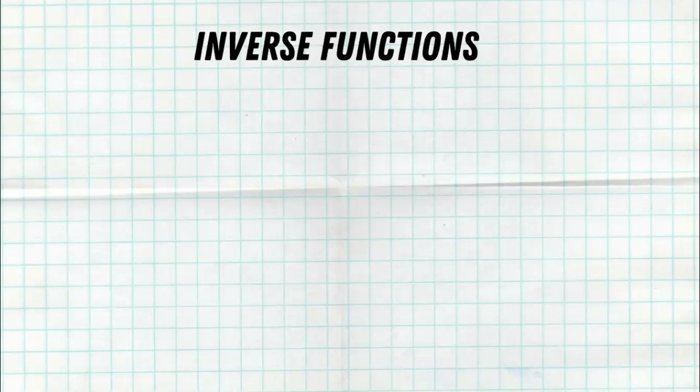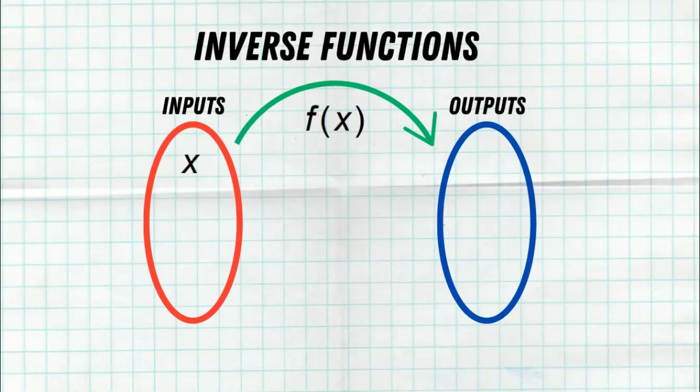Before we dive too far into talking about inverse functions, let's quickly remind you what a function is. A function takes inputs and gives you outputs, with only one simple rule: every input is allowed to have one and only one output. Now an input could lead to 'does not exist' or undefined — we certainly see that in rational functions all the time with holes or vertical asymptotes — but you cannot have more than one output for any one given input.